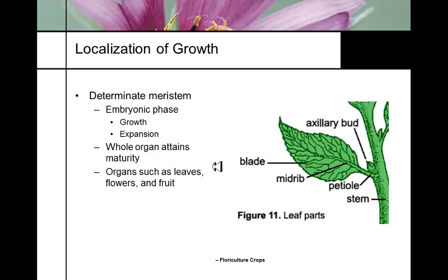In this picture we have a leaf blade. The leaf blade itself is determinate, while the axillary bud has a meristem which is permanently embryonic.